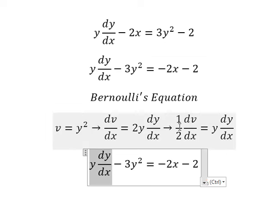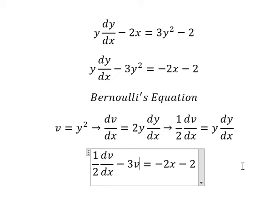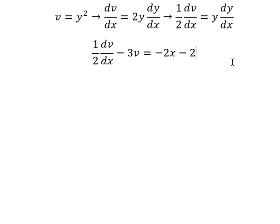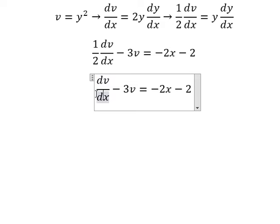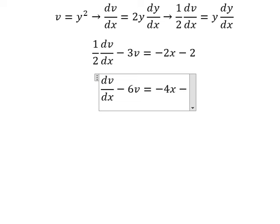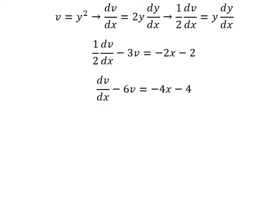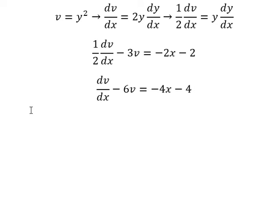So this term we replace with this, and this term we replace with v. Next we multiply both sides by number 2.